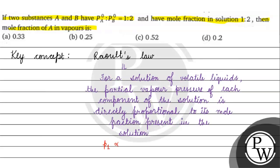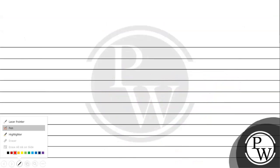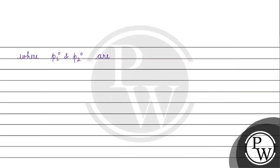Toh uska jo partial vapor pressure hoga, wo uske mole fraction ke directly proportional hoga. Aur agar hamare paas component 2 hai, uska partial vapor pressure bhi proportional hoga uske mole fraction ke. Toh proportionality sign hatake hum likhenge: P1 = P1° × x1. P1° basically partial vapor pressure of component 1 at same temperature. Similarly P2° and P2 notation.